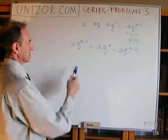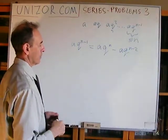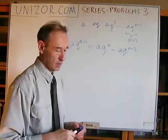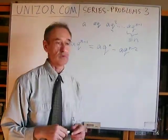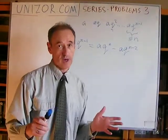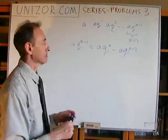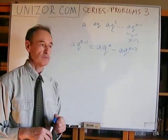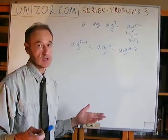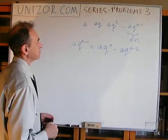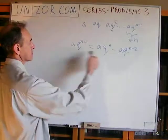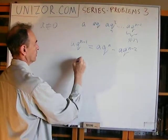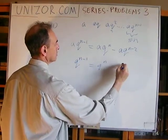We have two different variables, A and Q, and one equation. But fortunately, things cancel out. We can divide everything by A — we assume the first term of a geometric sequence is not equal to zero, otherwise the sequence is trivially all zeros. That allows us to divide both sides by A. After dividing, we have Q to the n minus one equals Q to the n minus Q to the n minus two.